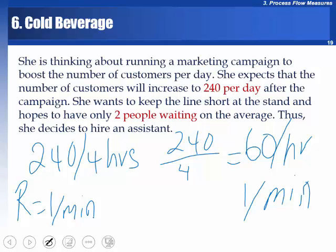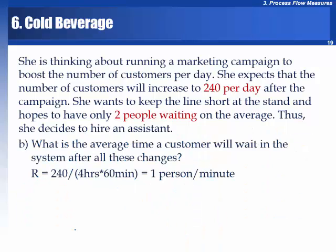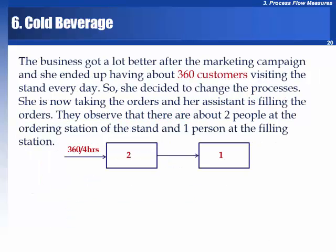On average, two people are waiting: I equals 2. Therefore, 1 times T equals 2, so T equals 2. On average two people are waiting at 1 customer per minute — applying Little's Law, a customer stays for two minutes.